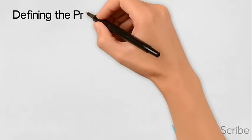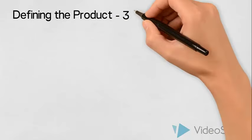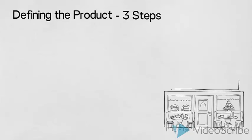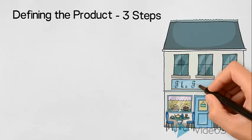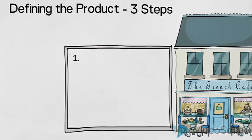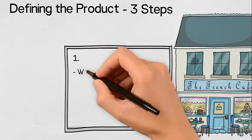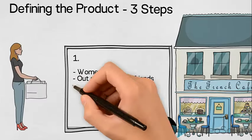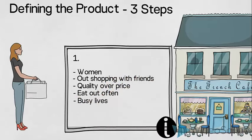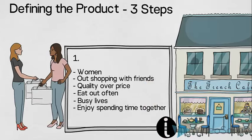Here we will use a few simple tools and we will divide our process into three simple steps. Let us use this cafe as an example. It is called the French Cafe and it has recently opened up in town. It specializes in French cakes and desserts. Step number one. Briefly describe their primary target group is women who are out shopping with their girlfriends. They value quality over price. They eat out often. They lead busy lives. They value spending time together. And they are quite image conscious.